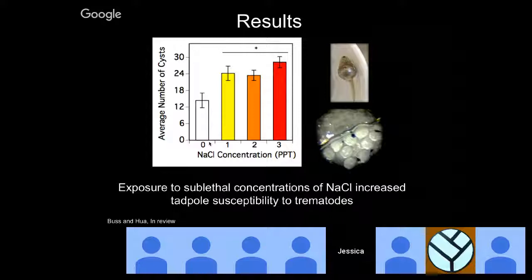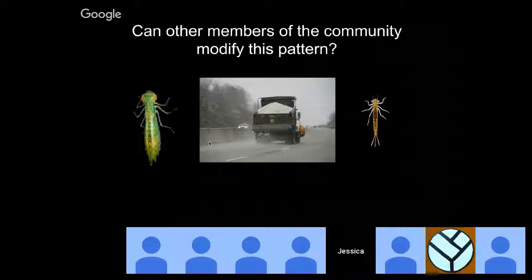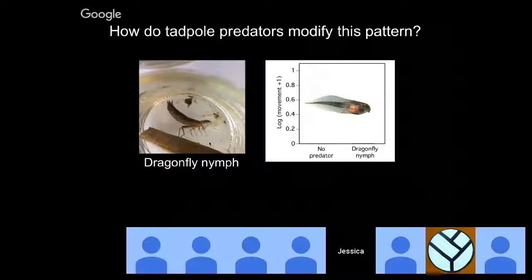Nick found that tadpoles not exposed to salt had 12–15 trematode cysts, but regardless of the sublethal NaCl concentration, exposure increased tadpole susceptibility to trematodes. The point is we don't always need to worry only about lethal concentrations — low concentrations can still have devastating effects when tadpoles face other stressors. Nick then asked: what about adding further community complexity? Hosts and parasites are embedded in more complex communities that include predators.